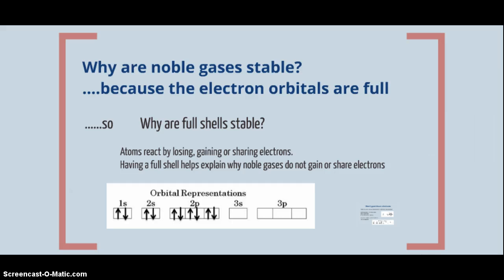So we need to dig a little deeper, dig below the top surface of the iceberg and find out what the real answer is. So why are noble gases stable? Because the electron orbitals are full. Well, why are full shells stable? That's the question we now need to answer.